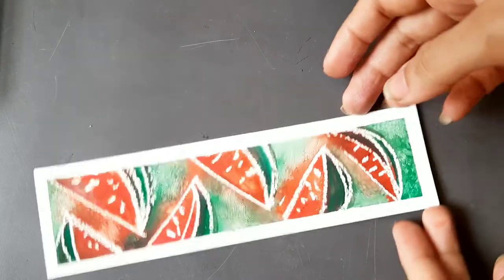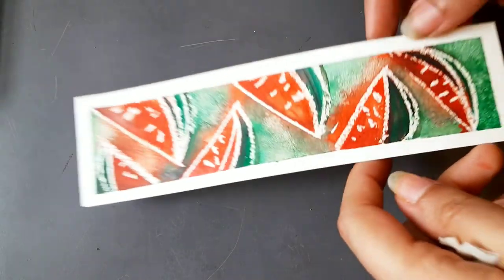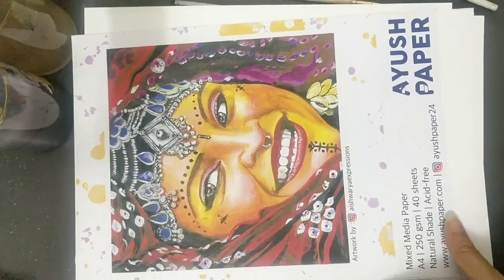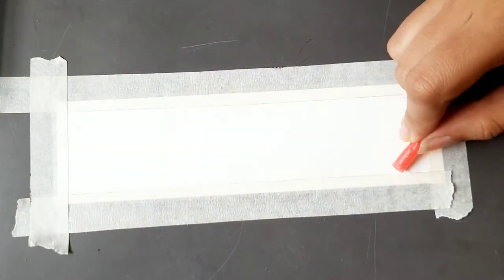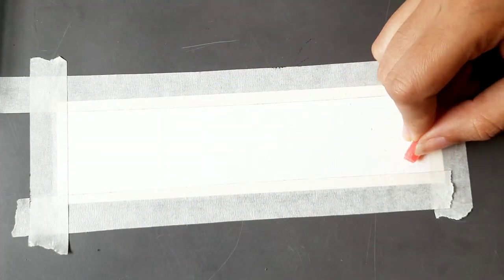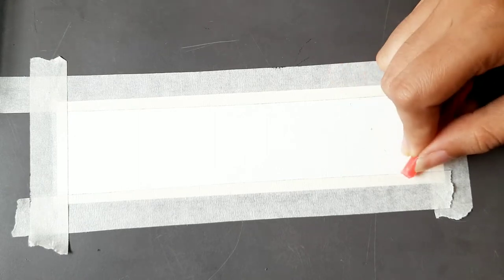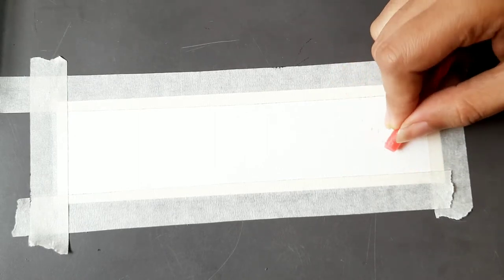Hello, today we are going to be making this beautiful bookmark. For that I'm using Ayush papers mixed media paper which is 250 GSM. I have taped my paper on all four edges with a carpenter's tape.